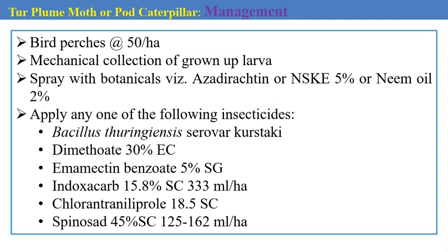For management of tur plum moth, we can use bird perches and mechanical collection of grown-up larvae present on pod surfaces. For botanical control, azadirachtin, NSKE or neem oil can be used. Bacillus thuringiensis is also one of the effective bacteria against nearly all caterpillars. Chemical pesticides recommended include dimethoate, emamectin benzoate, indoxacarb, chlorantraniliprole and spinosad against the tur plum moth caterpillar.